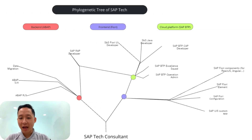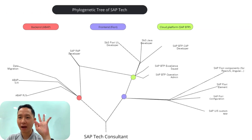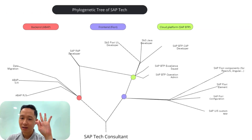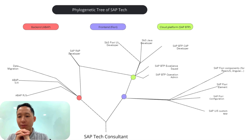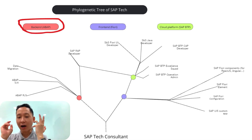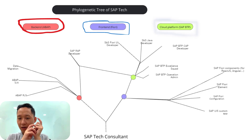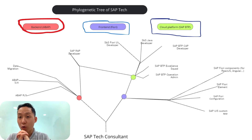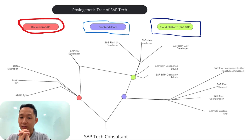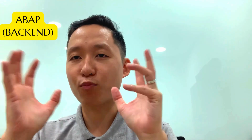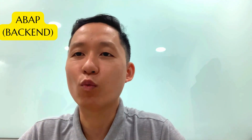The roadmap has three major paths that branch off from the central SAP tech consultant. These are ABAP, FIORI, and SAP BTP. Each of these has its own unique focus and offers different opportunities for specialization. Let's break them down one by one.